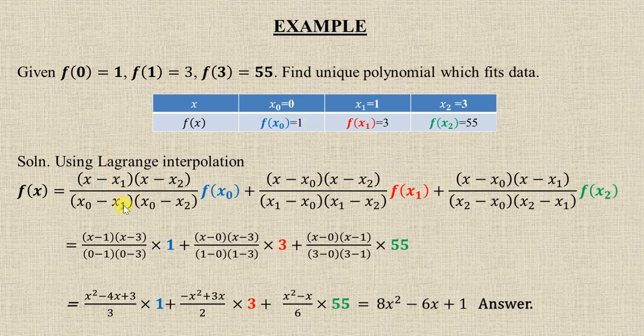Substitute x₀ = 0, x₁ = 1, x₂ = 3. You will have this quantity. Similarly here x₀ is 0, x₂ is 3, x₁ is 1. At x equal to 3, you substitute and you will have this quantity. Just simplify this and you will have the final answer.